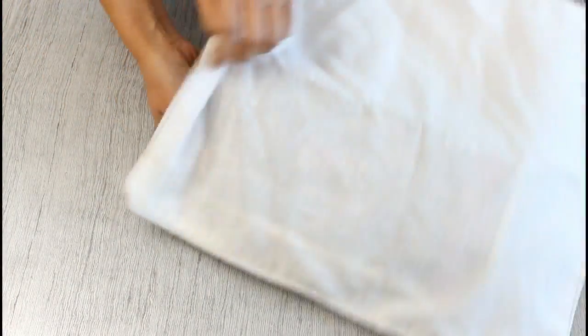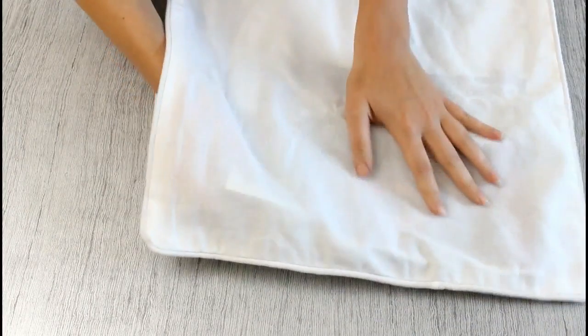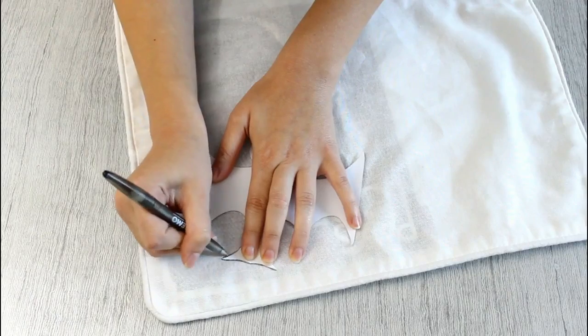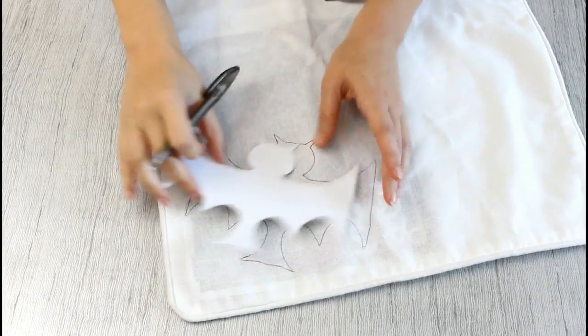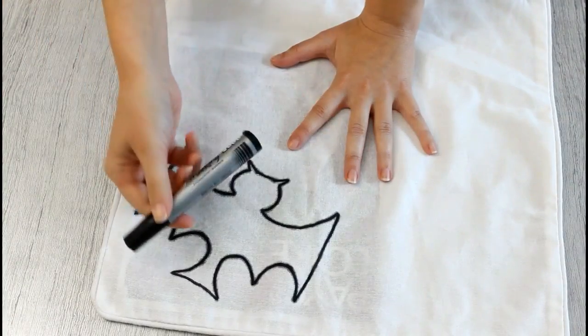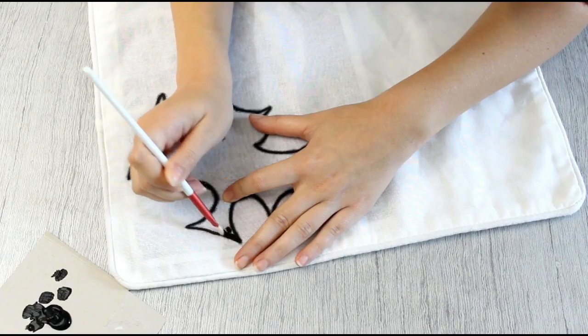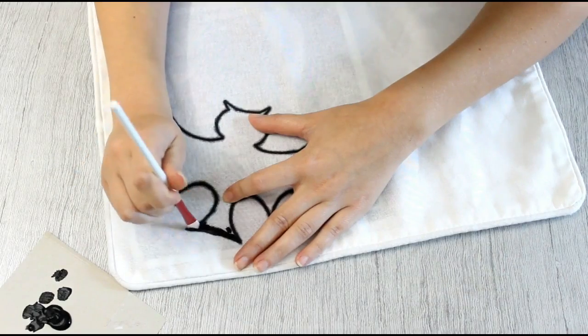I'm going to take my pillowcase and place a magazine inside to avoid the paint transferring to the other side. I'm going to place my template and trace around it with a pen. I'm going to make the outline with a marker so that it's easier to paint afterward. And I'm going to fill the bats with black paint.